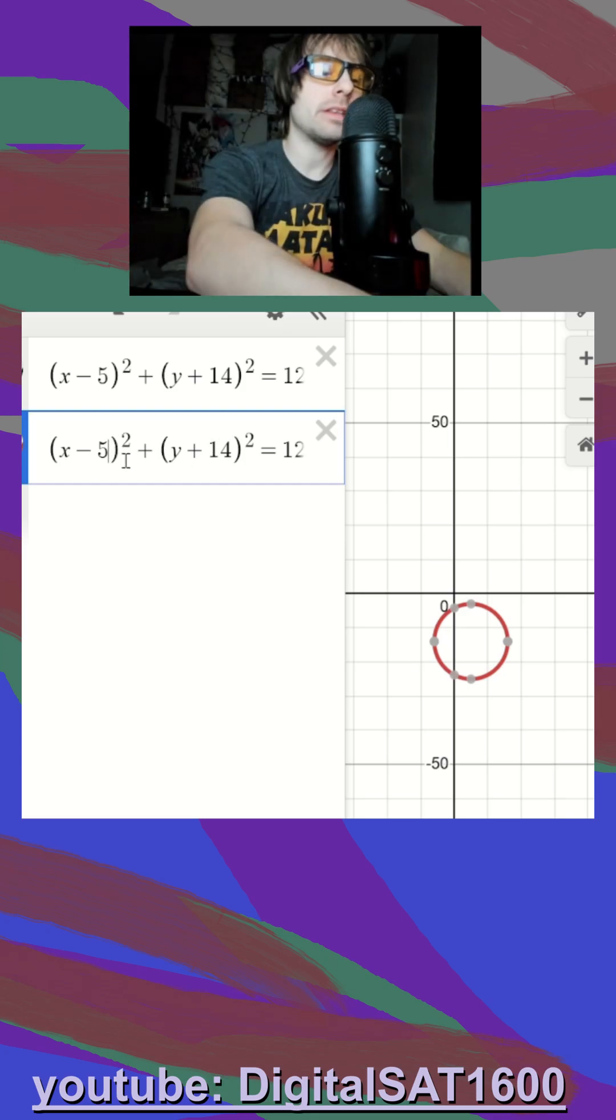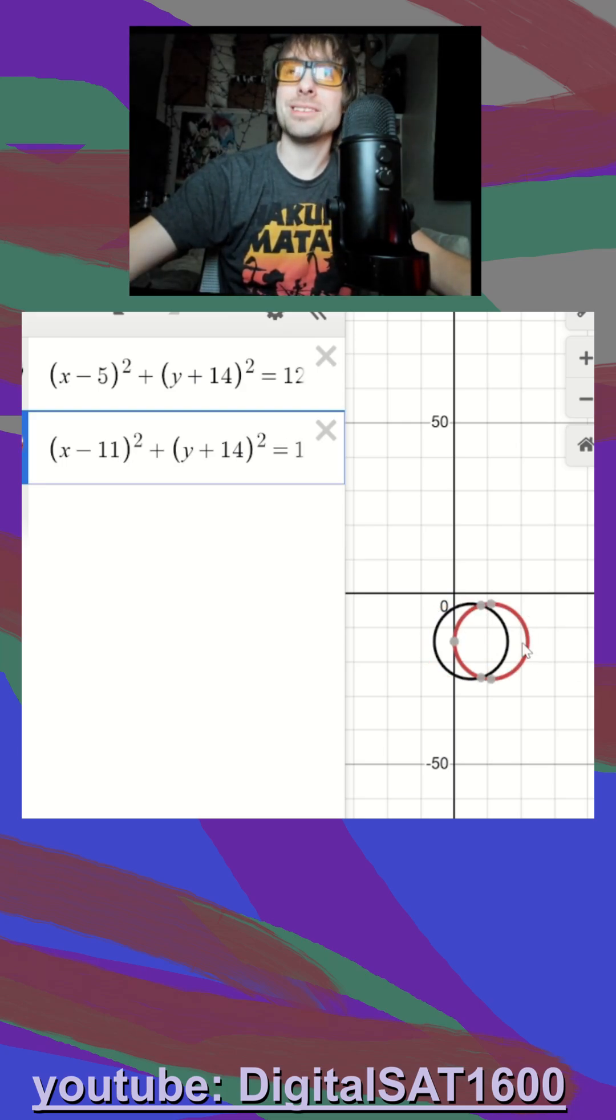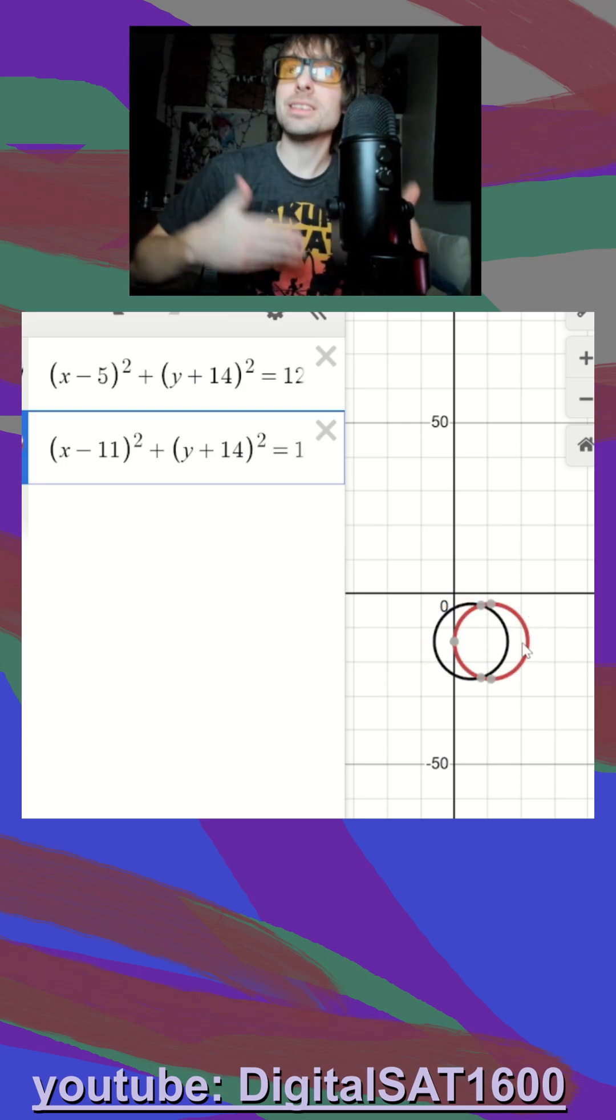So remember, our first inclination was, well, since it's to the left six, we should minus six, right? So we do minus five minus six, which would be minus 11. And it actually moves us to the right, because in parentheses, it's the opposite.